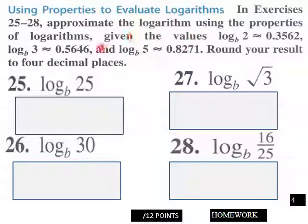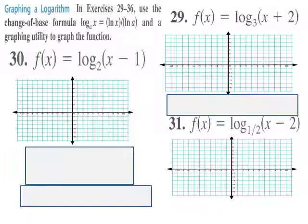Approximate the log using the properties of logarithms. Given the values, log base b 2 is approximately that, and then et cetera. Then, round your result to 4 decimal places, here. 12 points, here. Page 4.